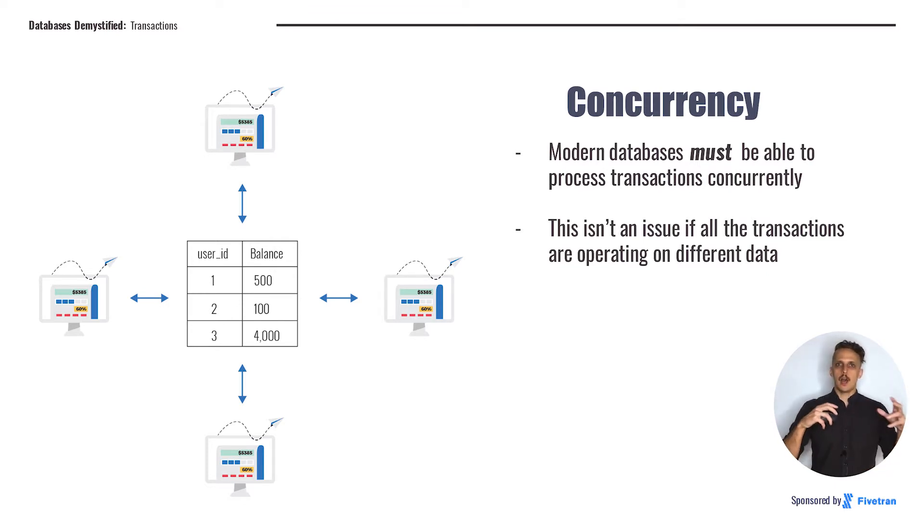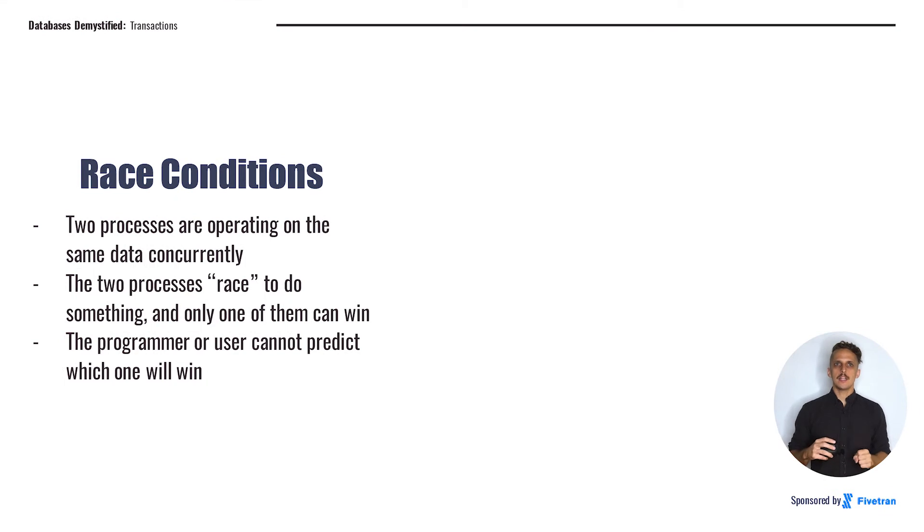But when it comes to an activity like updating the in-stock amount of an item that's on sale, this can actually get pretty tricky. Additionally, anytime you're doing processes in parallel, if they're operating on the same underlying data, you face the danger of what computer scientists call race conditions. Race conditions happen when two processes are trying to change the same data, and the result will change depending on which one gets there first. The two processes are racing to do something, and only one of them can win.